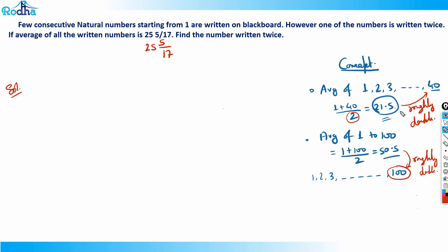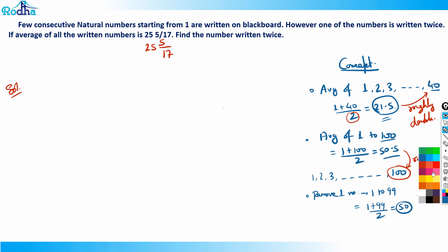Even if I remove one number, it won't impact the average much. For example, if I remove the maximum number 100 from 1 to 100, the average of 1 to 99 is (1+99)/2 = 50, which is still roughly half of 99. I'm never saying exactly — it's roughly double. This relationship holds.